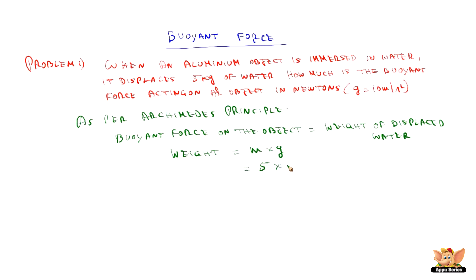Here mass of the water is 5 kg, g is 10, so it is 50 Newtons. Hence therefore the buoyant force on the object is 50 Newtons.